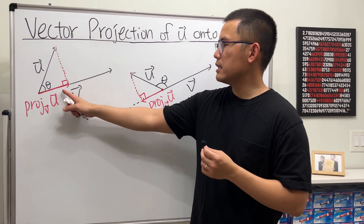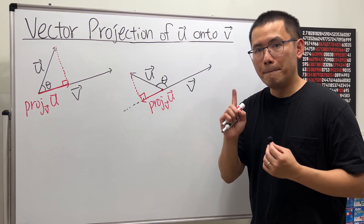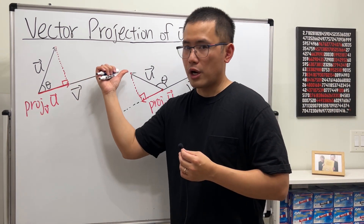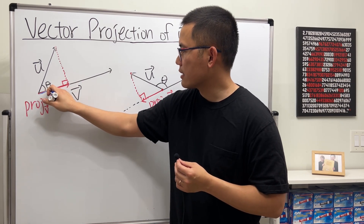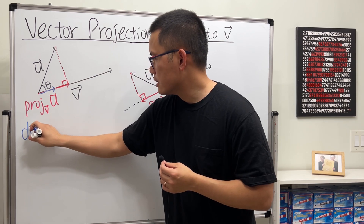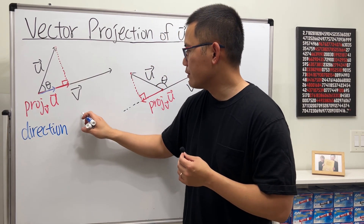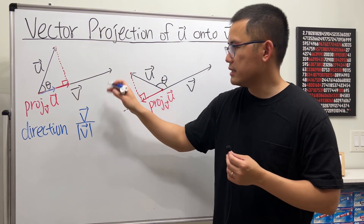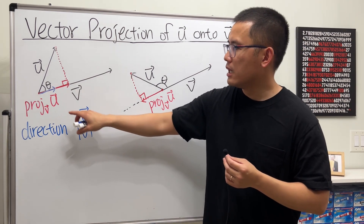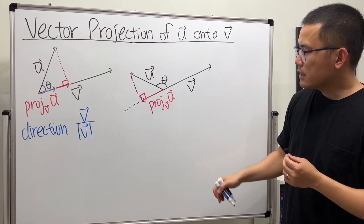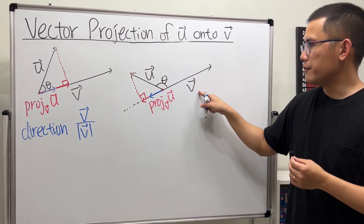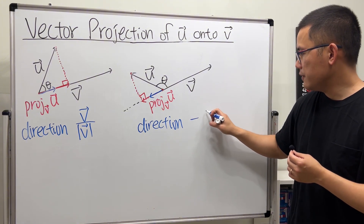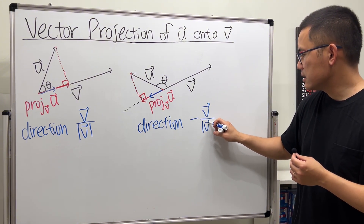Now let's see how to formulate this. They are vectors, so we need the magnitude and also the direction. For the direction, it's in the v direction, so let's take the unit vector: take the vector v and divide it by its magnitude to get the unit vector in that direction. In the obtuse case, though, the direction is actually opposite of v, so it will be the negative of that — negative v divided by its magnitude.